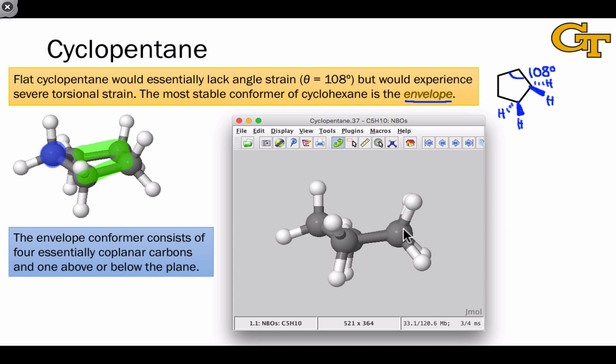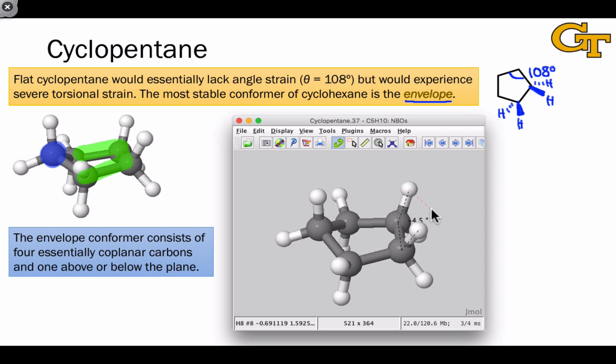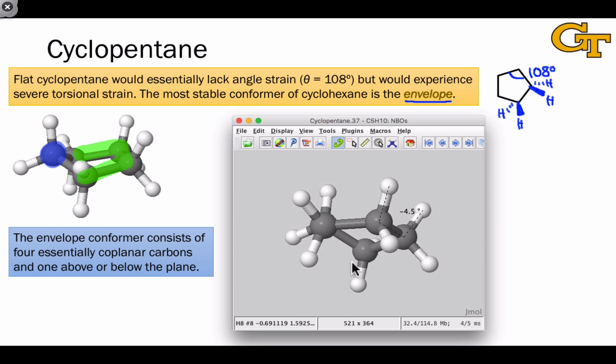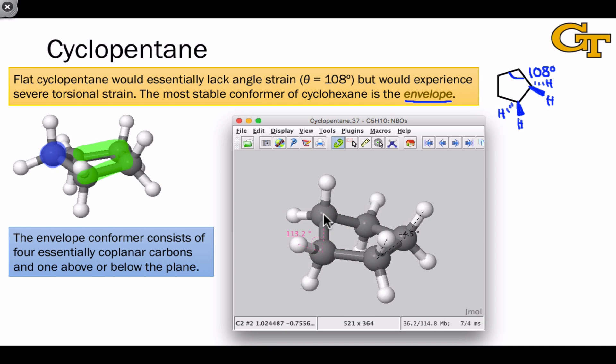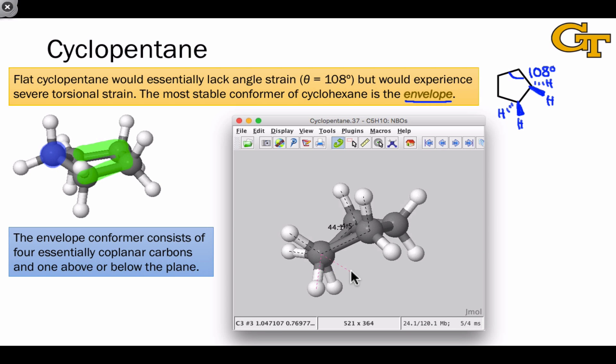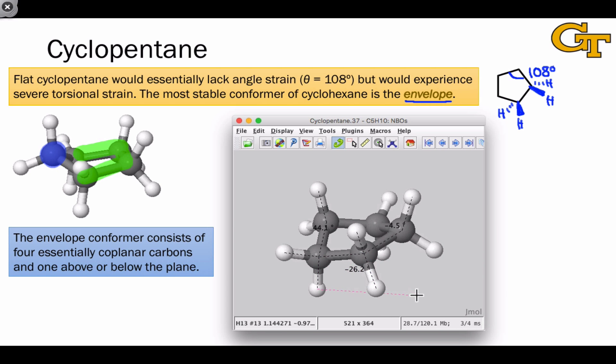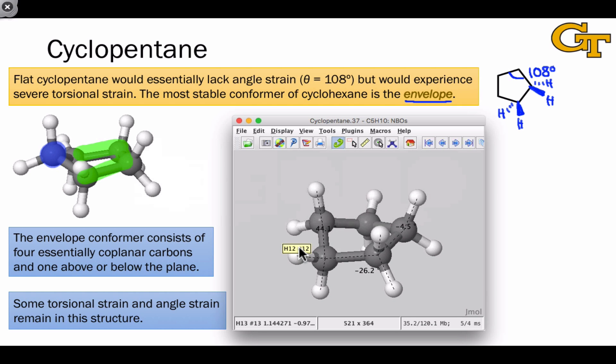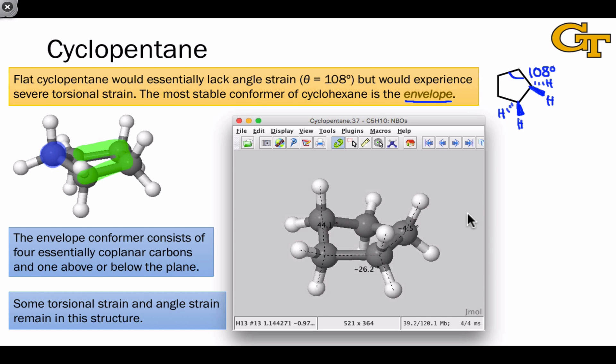The worst offenders for torsional strain are these two carbons on the opposite side of the point, which in this structure are these two over here, which appear to be almost completely eclipsed. If we look at the dihedral angle here, it's only about five degrees, which is still very close to eclipsed. However, things are looking much better for the other carbons. For example, if we focus on the carbon at the point, its dihedral with the CH bonds next door is getting close to the 60-degree ideal, 44.1 degrees in this case. And the other carbons along the sides of the envelope are looking decent here as well. The dihedral here is that negative 26 degrees, and that should look very familiar from the cyclobutane puckering case we just looked at. So the dihedral angles here are looking better from the perspective of torsional strain. That said, some torsional strain and some angle strain remain in this molecule, so it's not as stable as linear acyclic pentane.